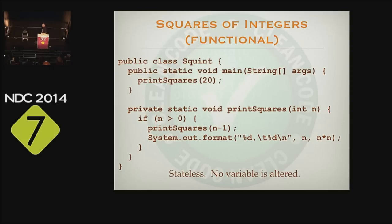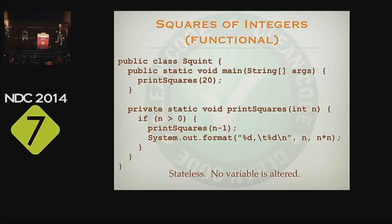What the heck is it with these platforms — .NET and Java? Why would tail call optimization even be an issue? The year is 2014. This is an optimization that was invented in the 1950s. What's up with our platform people? I think they were kids out of school.